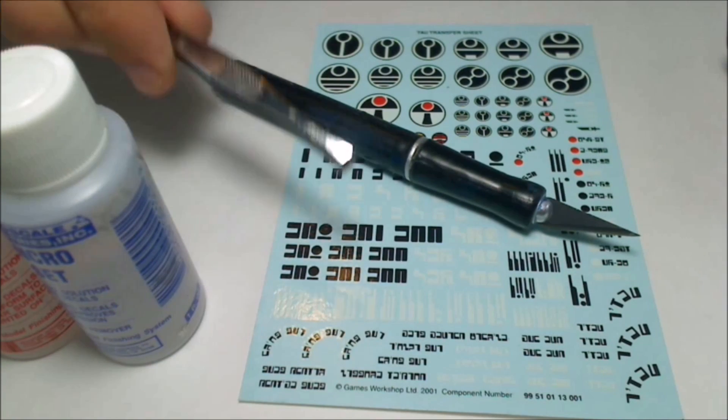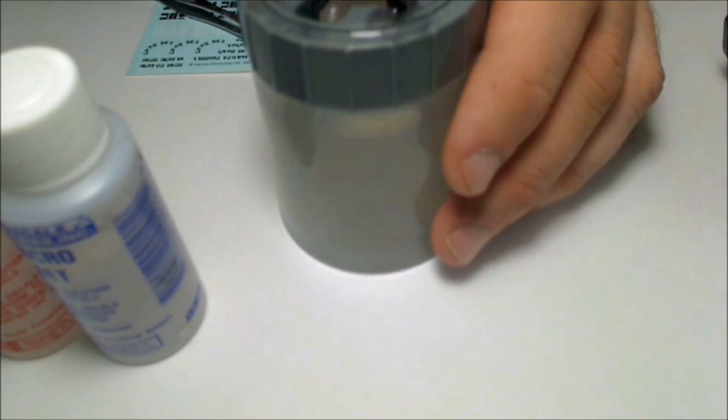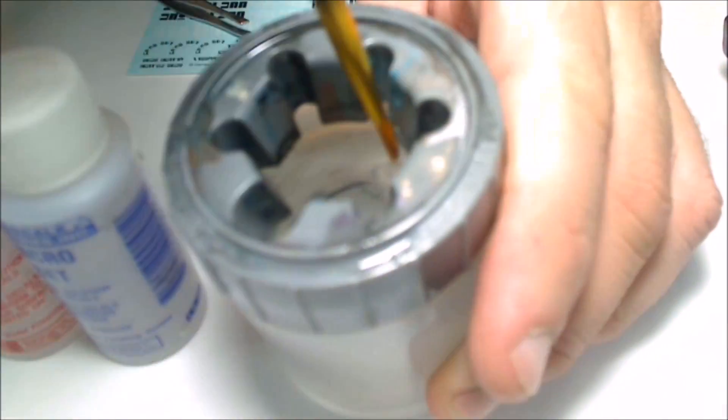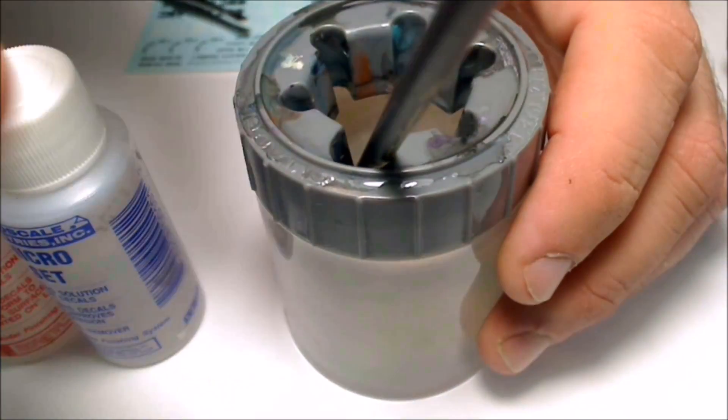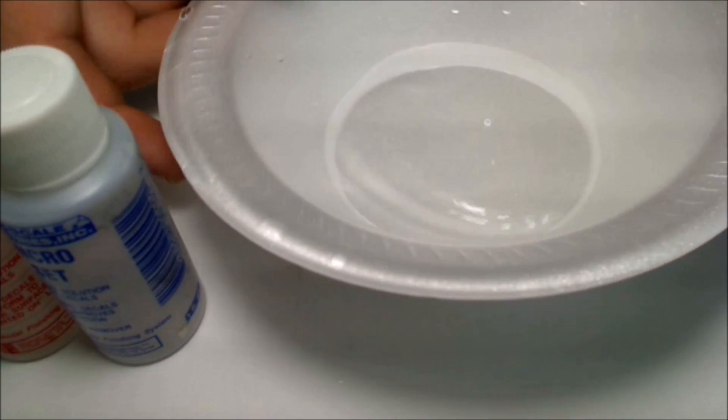So this is the stuff you'll need: your Microset, Microsol, a transfer sheet, hobby knife, tweezers, a pot full of just regular water, a big round brush, and then the last thing is going to be just a bowl with some water in the bottom.